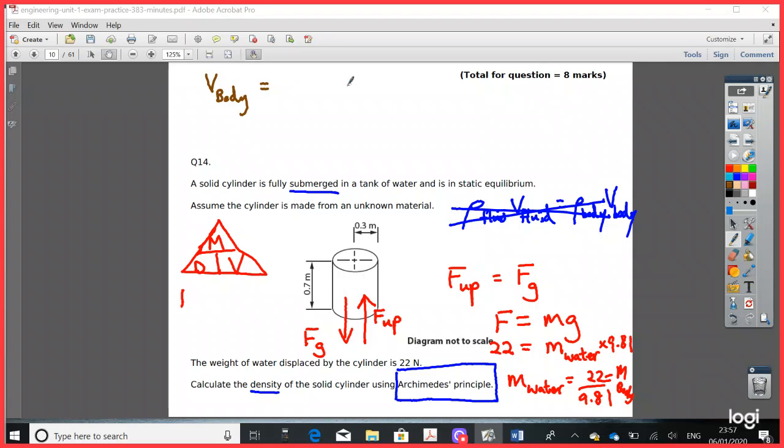So the volume of the body is equal to, well it's the cross-sectional area times by the depth. So the cross-sectional area just happens - it gives us the radius - so πr² times the depth or if you like, the height.